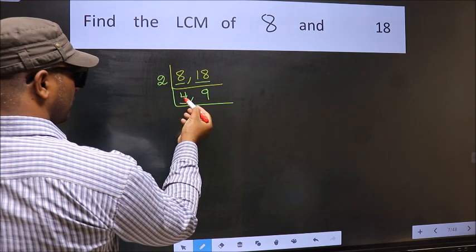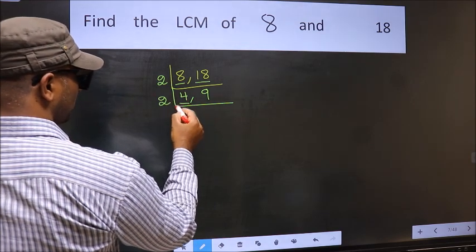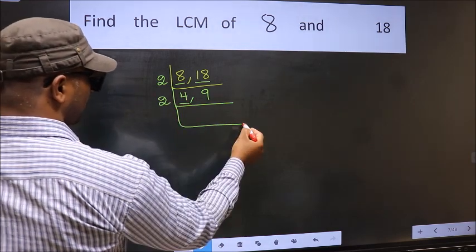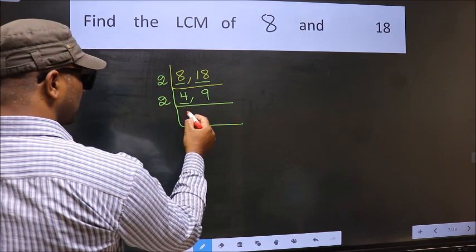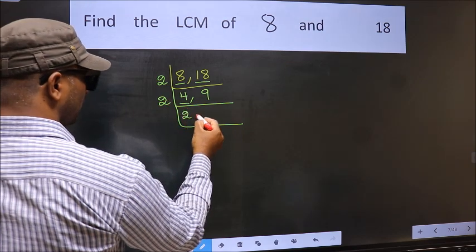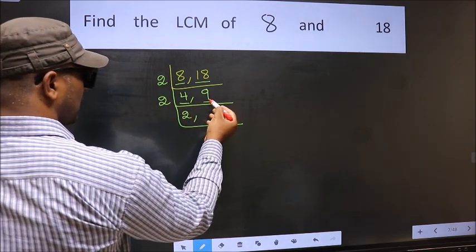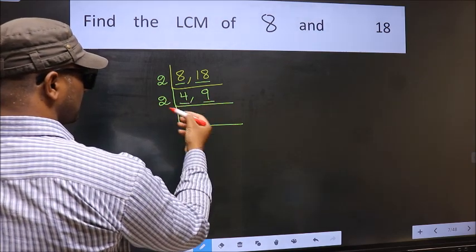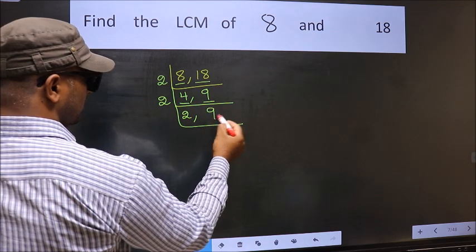Now here we have 4. 4 is even, so take 2. When do we get 4 in the 2 times table? 2 twos are 4. Now the other number 9 is not divisible by 2, so we write it down as it is.